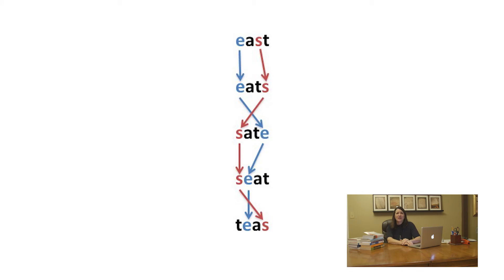Speaking of anagrams, let's look at one to illustrate how important paying attention to letters is. We have four letters — E, A, S, and T — switched to create five different words. Letter order matters a lot if we're going to read accurately and automatically. Just like that girl switched 'trial' and 'trail,' we see this in kids all the time. We have to teach them to attend to the letters and have their brains do it for them.